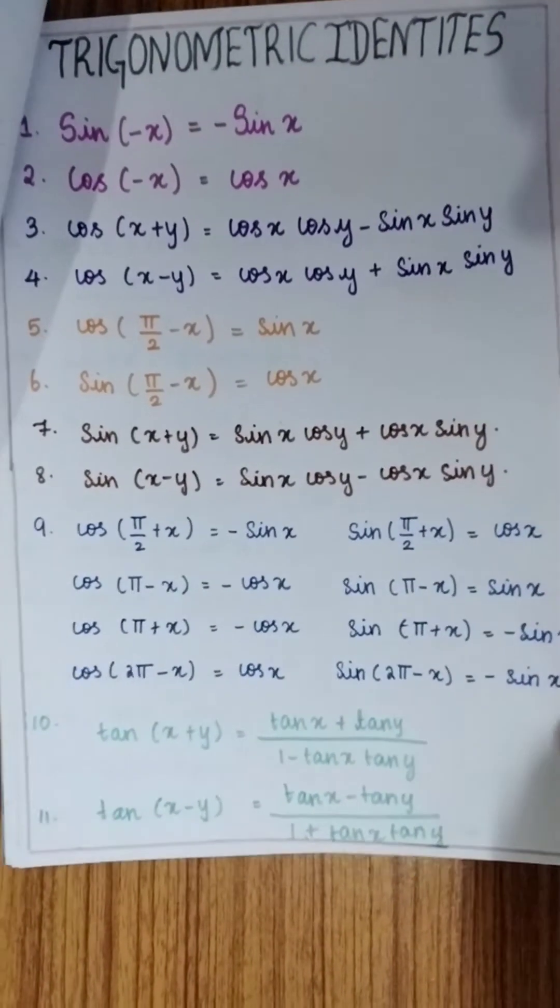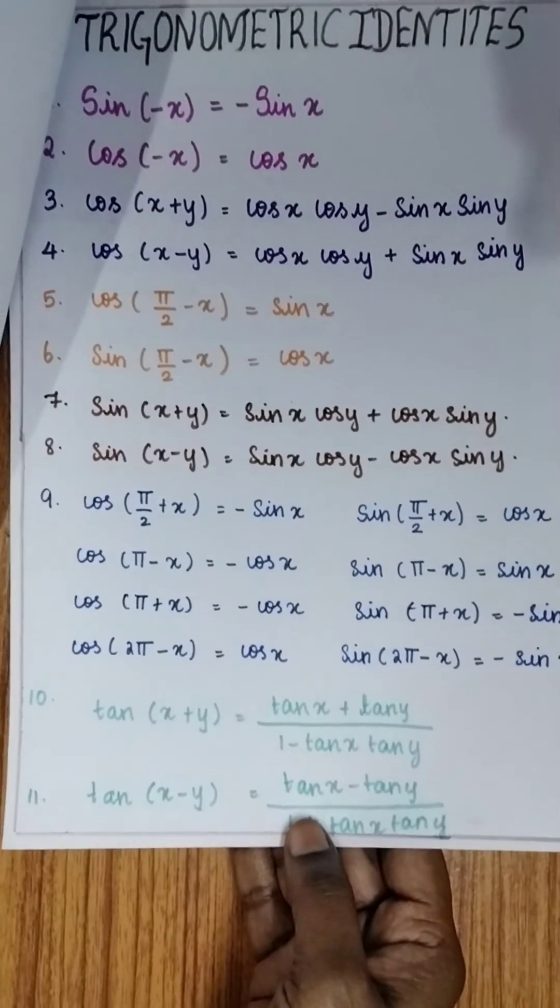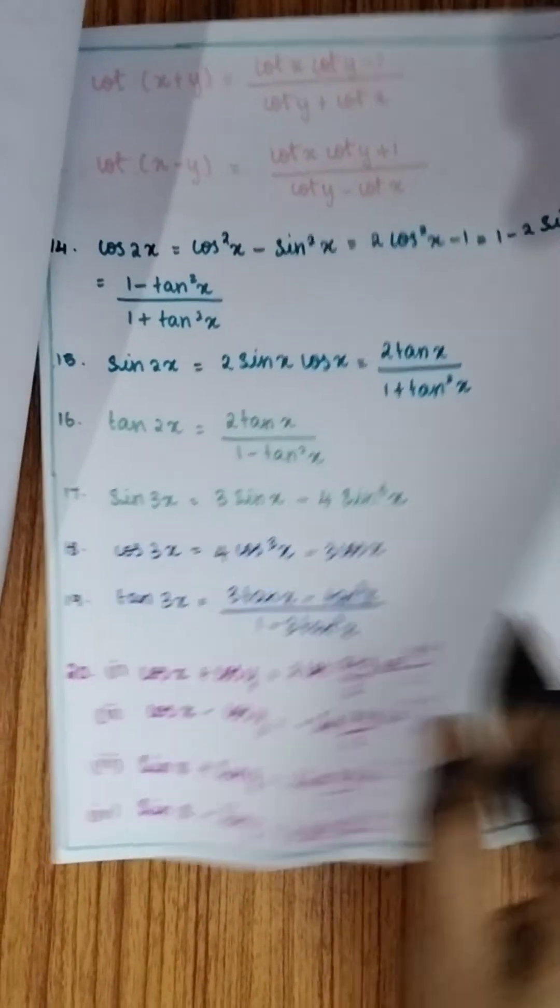And on the next page is given all the, I think we have around 36 identities in this lesson in class 11. That is being explained, that is being given here. All the formulas are given here.